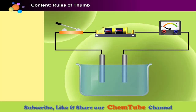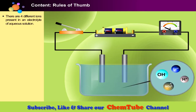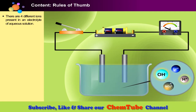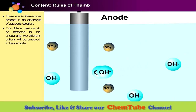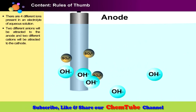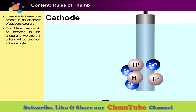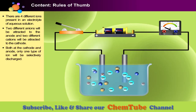Rules of Thumb: In electrolysis of aqueous solution, there are four different ions present. Two ions from dissociation of the solute, and two more ions — hydrogen ions and hydroxide ions — from water. Two anions will be attracted to the anode and two cations will be attracted to the cathode. In either case, only one cation and one anion will be selectively discharged.